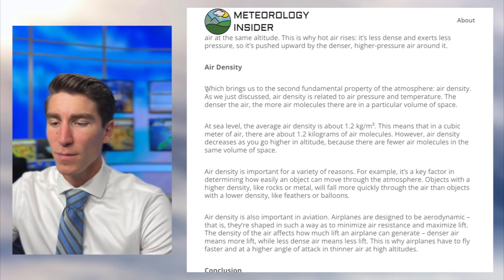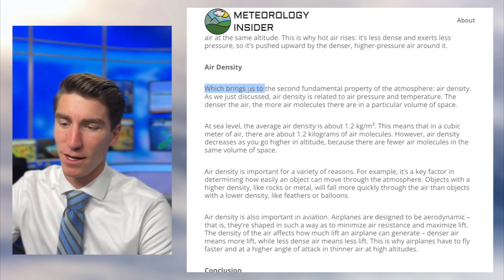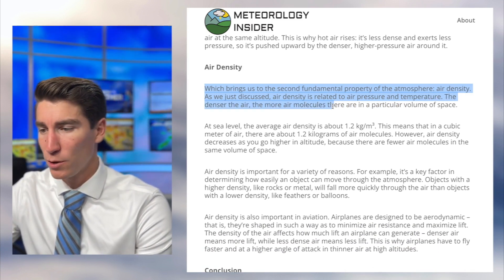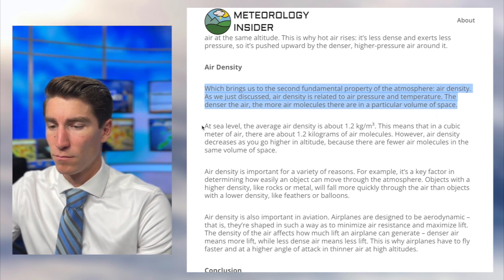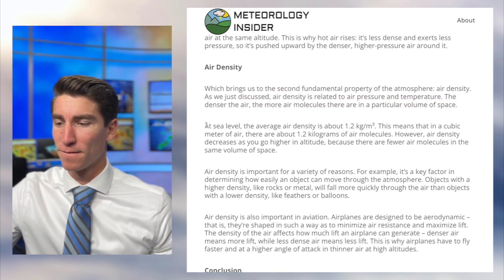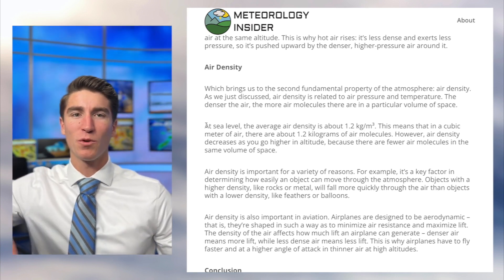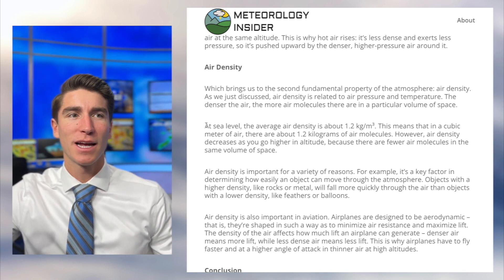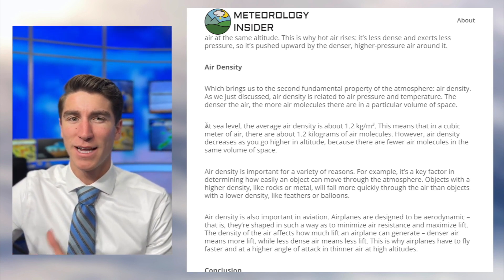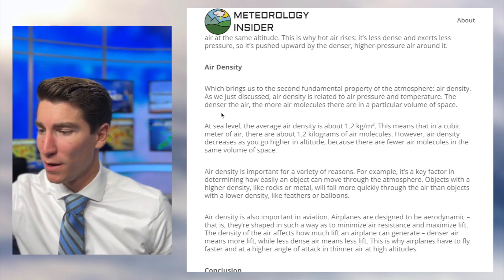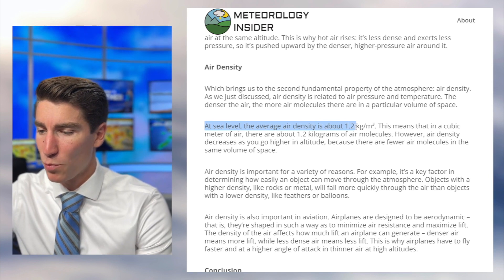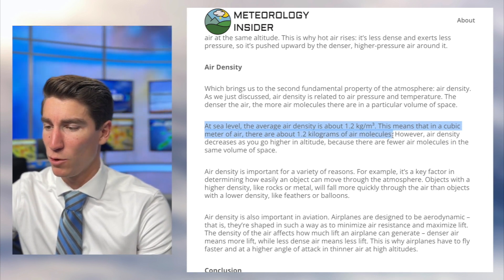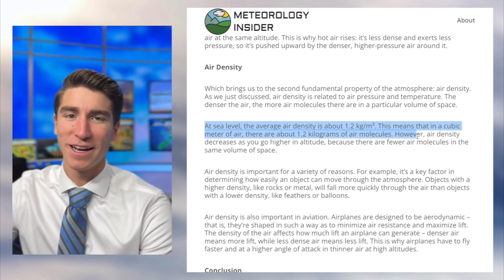Which brings us to the second fundamental property of the atmosphere: air density. As we just described, air density is related to air pressure and temperature. The denser the air, the more air molecules there are in a particular volume of space. Thinking back to 100 people in a studio apartment versus 100 people in a gymnasium — in the studio apartment you're going to have a greater density, since density is mass divided by volume. At sea level, the average air density is about 1.2 kilograms per cubic meter, meaning there are about 1.2 kilograms of air molecules in a cubic meter of air.